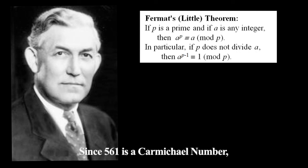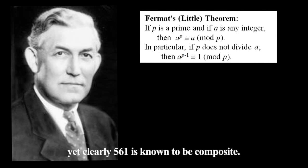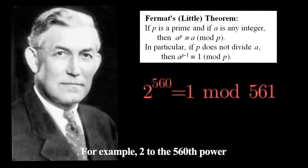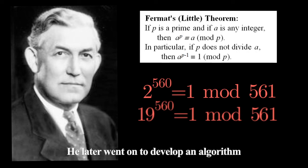Since 561 is a Carmichael number, all numbers coprime to it raised to the 560th power modulo 561 will equal 1, yet clearly 561 is known to be composite. For example, 2 to the 560th power is congruent to 1 mod 561, 19 to the 560th power is congruent to 1, and so on and so forth. He later went on to develop an algorithm to compute all possible Carmichael numbers.